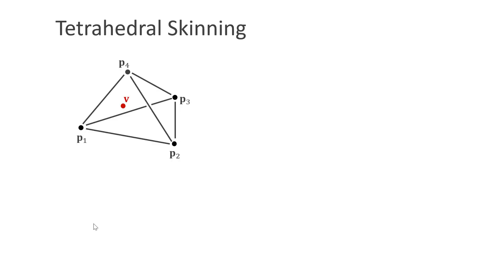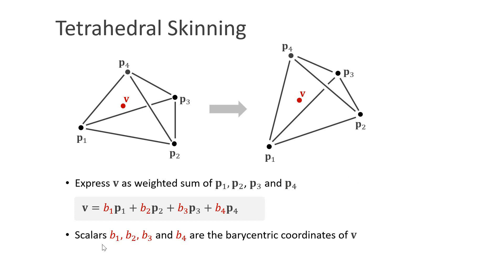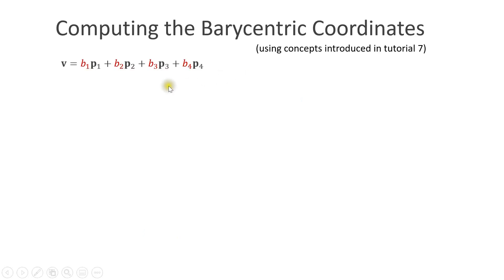The idea is as follows. Let's say we have a vertex of the visual mesh and a tetrahedron that encloses it. We want the vertex v to move with the surrounding tetrahedron. We can do this by expressing v as a weighted sum of p1, p2, p3 and p4, the particles adjacent to the tetrahedron. These scalar values are called the barycentric coordinates of v. They are unique for four points not contained in a plane. Now the question is, given the tetrahedron with adjacent particles p1, p2, p3 and p4 and the vertex coordinate v, how do we compute the barycentric coordinates?